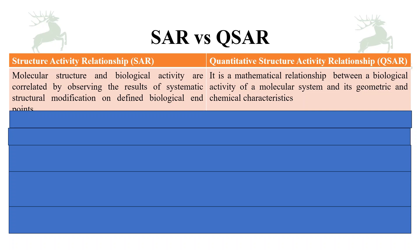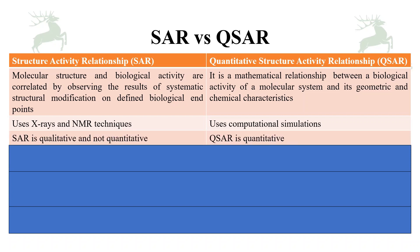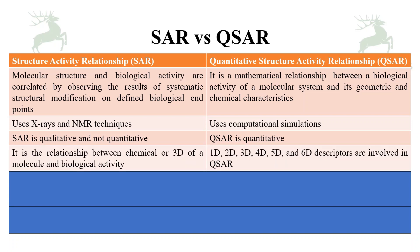QSAR is basically a subset of SAR. SAR uses X-ray and NMR techniques, whereas QSAR uses computational techniques. SAR is qualitative and not quantitative, whereas QSAR is quantitative. SAR describes the relationship between chemical or 3D structure and biological activity, whereas QSAR has many subdivisions: 1D, 2D, 3D, 4D, 5D, 6D, and even 7D descriptors.